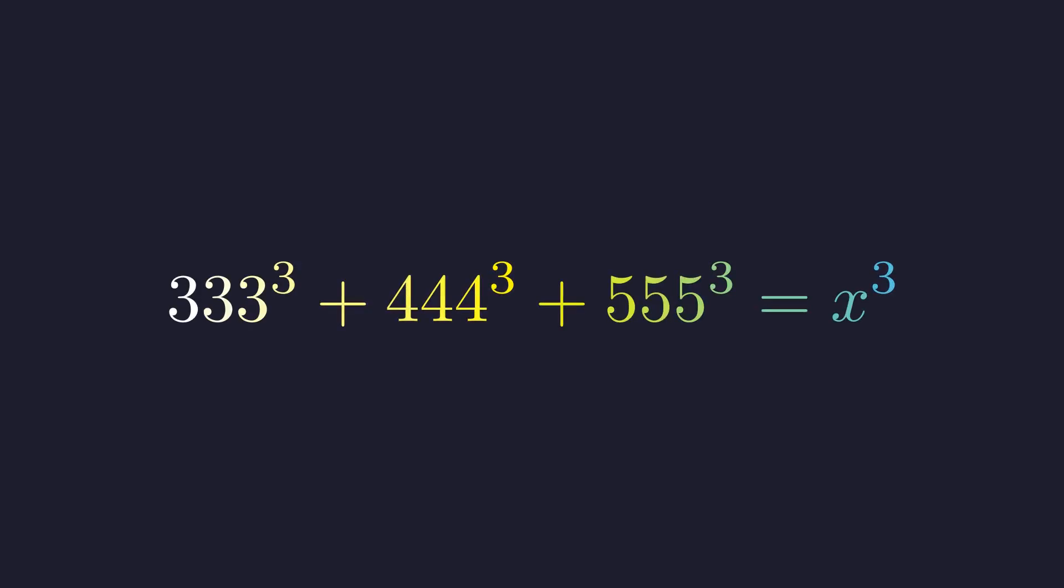Can you solve this in your head? 333 cubed plus 444 cubed plus 555 cubed equals x cubed. If you reached for a calculator, you're not alone. These numbers look massive. But what if I told you there's a hidden mathematical identity that makes this trivial? Stick around, because once you see it, you'll never forget it.